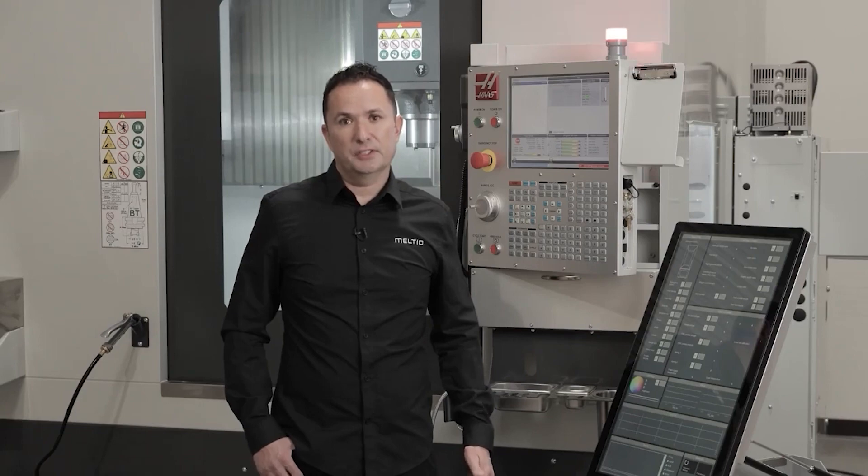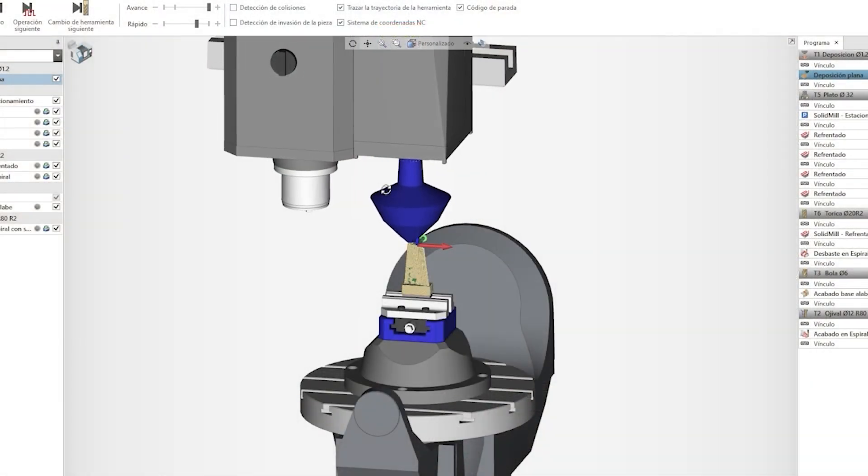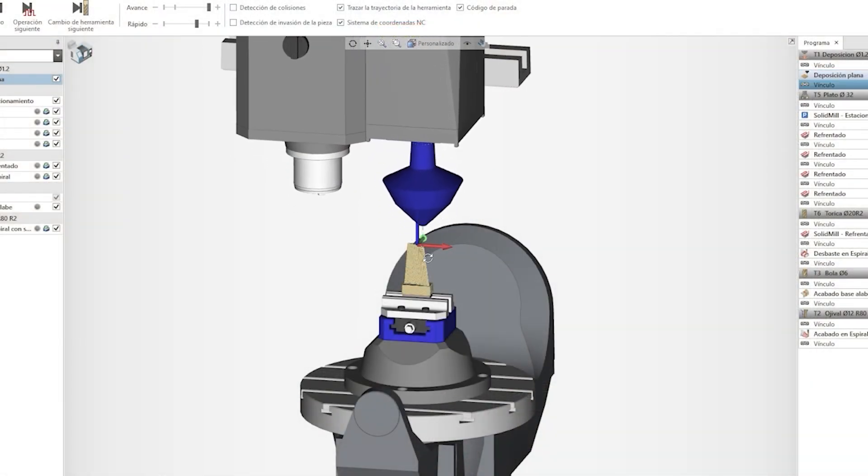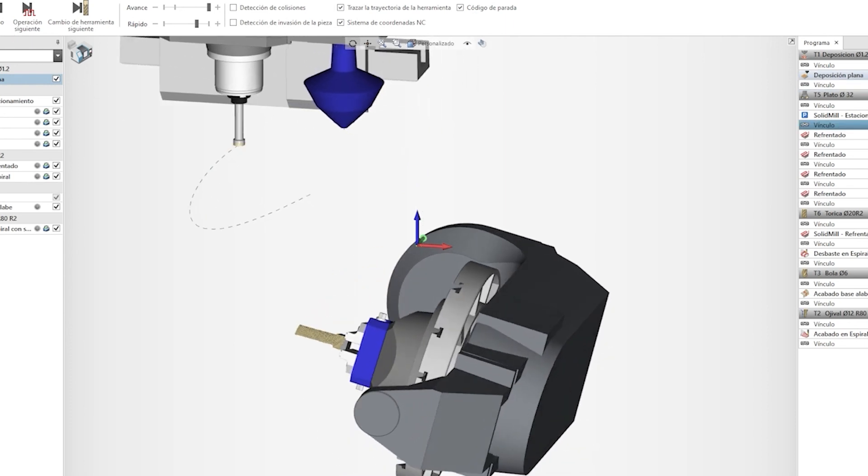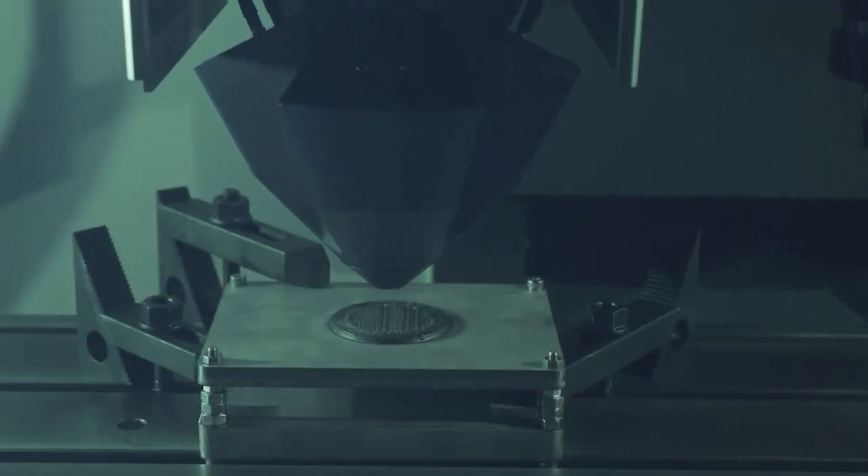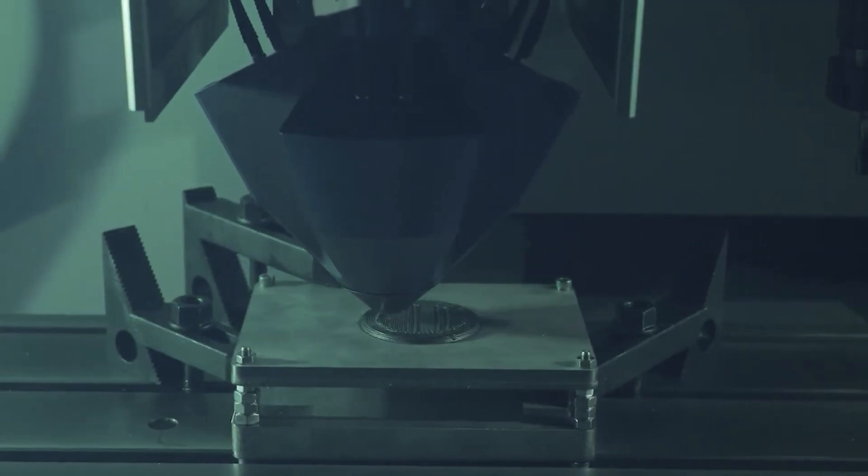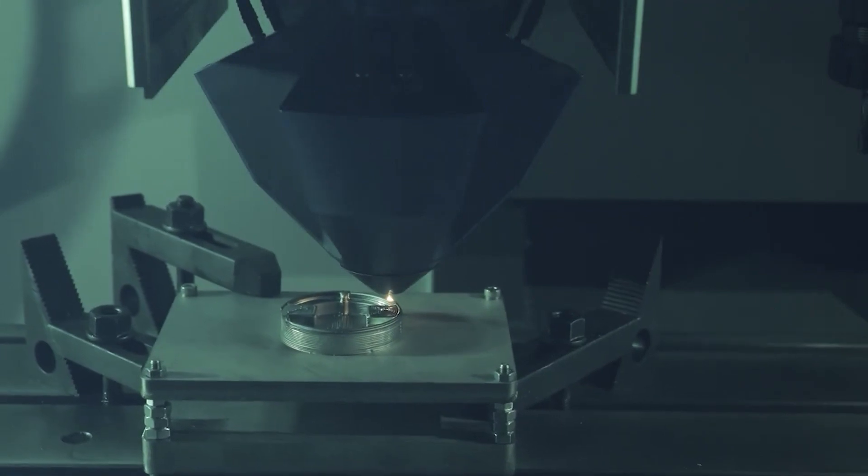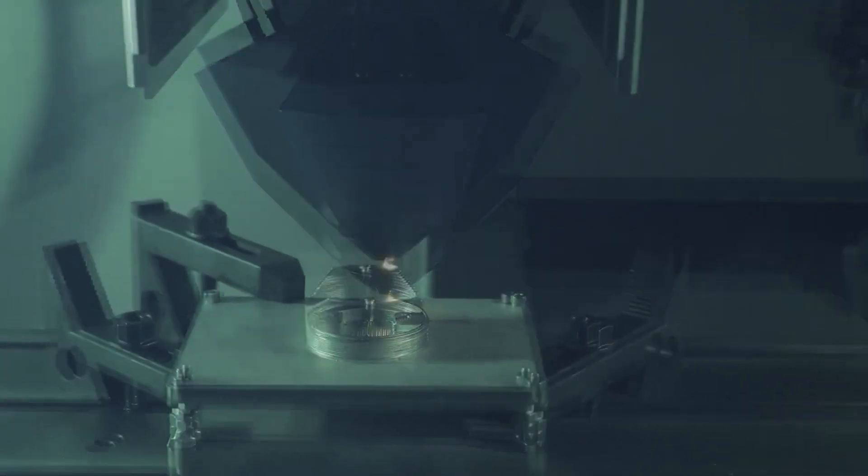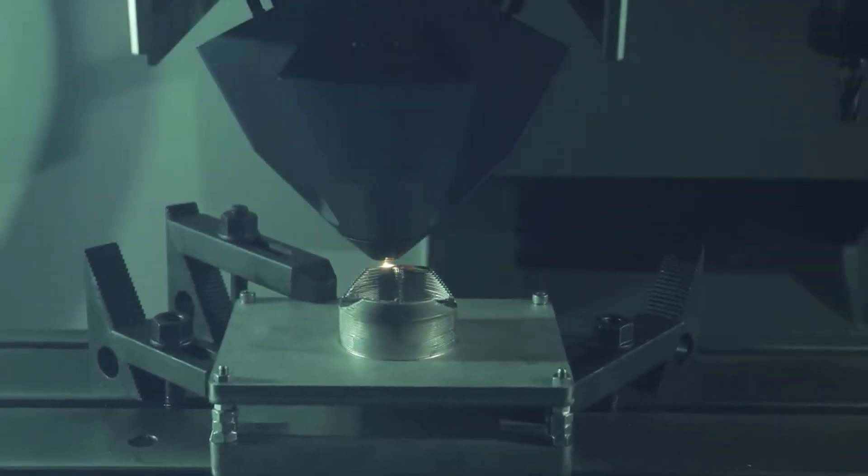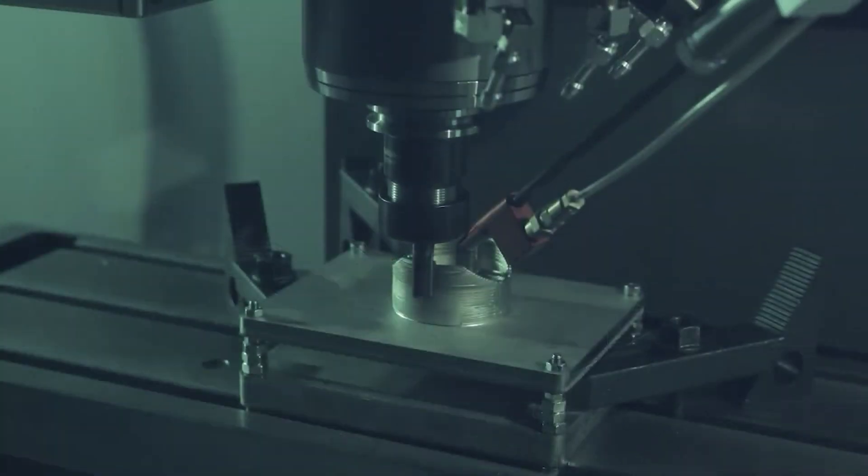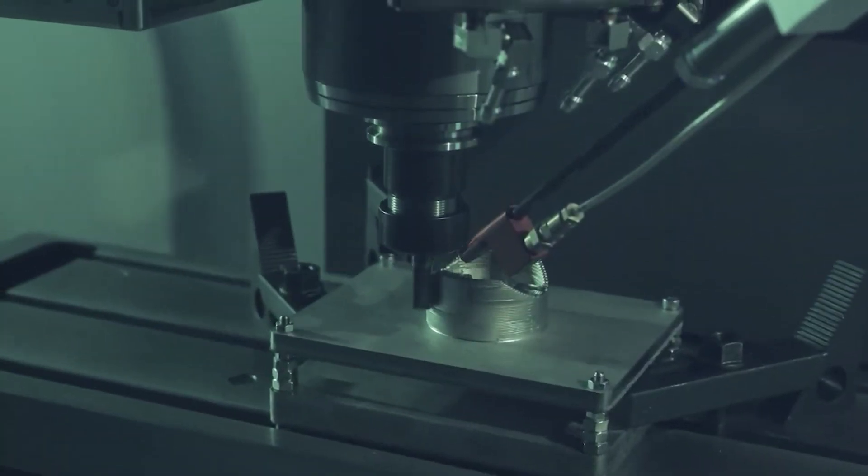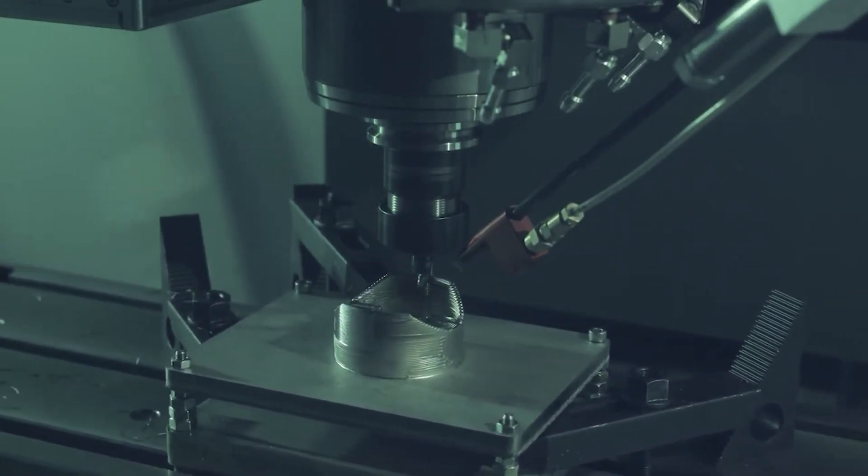Hybrid manufacturing starts with the CAD model of your part. Next, the CAD model is sliced to generate the g-code which is used to print and machine the parts. The g-code is executed on a CNC machine which communicates continuously with the Meltio engine during the printing process. The entire process can be set with printing and machining fully automated. The result is rapidly produced, low-cost final parts ready for your application.